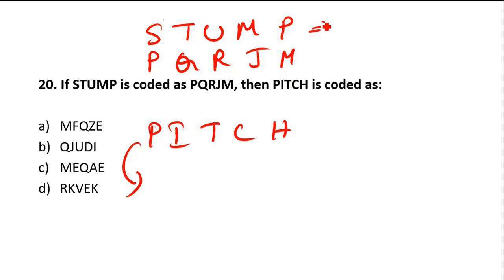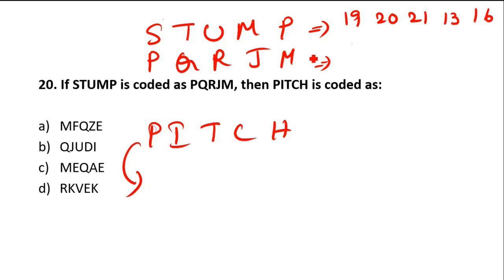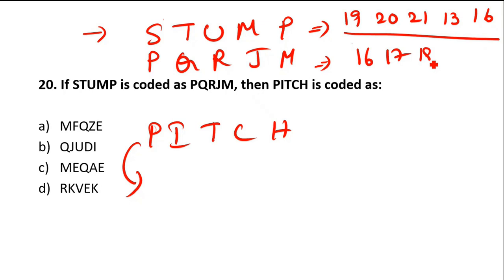Very simple. Let's write down the numerical values of the alphabets. S is 19, T is 20, U is 21, M is 13, P is 16. For STUMP, the code PQRJM has values: P is 16, Q is 17, R is 18, J is 10, M is 13.